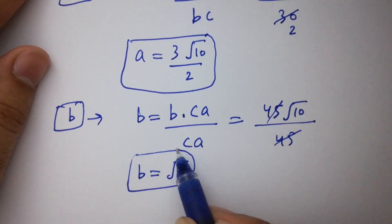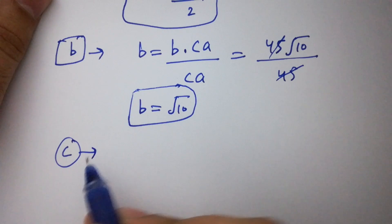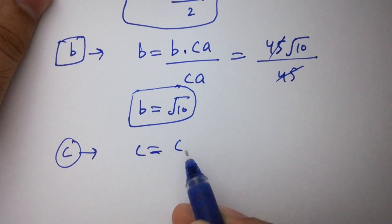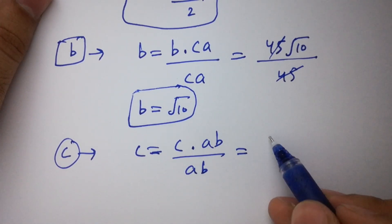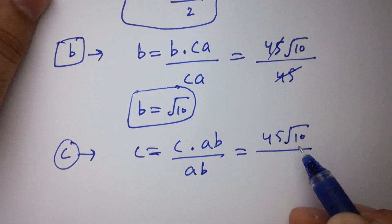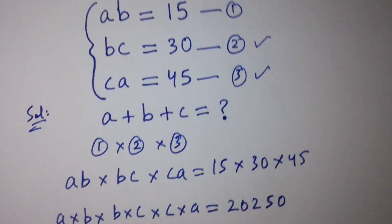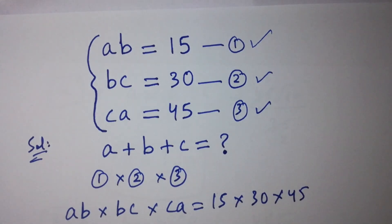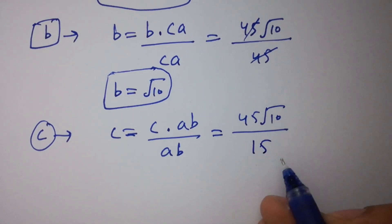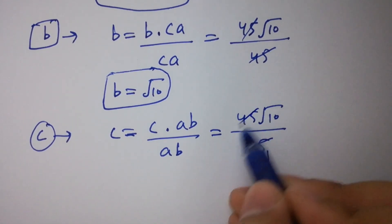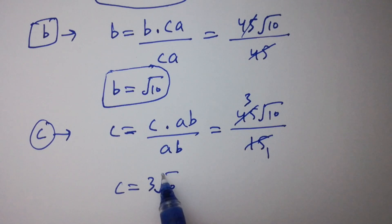That is the value of b. In the next step, I am going to find c. c equals abc over ab, which is 45 square root of 10 over ab. The value of ab is equal to 15. Simplifying: 15 times 1 is 15, and 15 times 3 is 45. So c equals 3 square root of 10. That is the value of c.